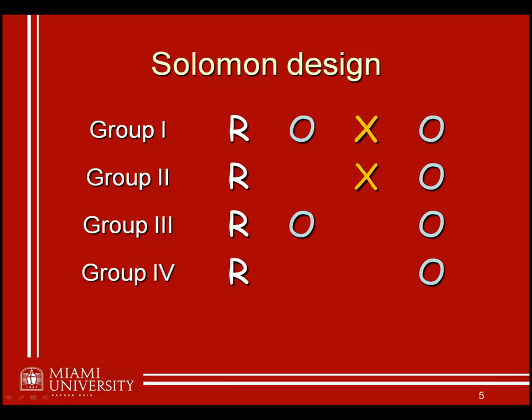Group one has both the pretest and the treatment. Group two has just the treatment. So at the level of treatment yes, we have pretest yes and pretest no — that gives us our first two groups. For the other level of the factor, treatment no, we again have pretest yes and pretest no, and that gives us groups three and four respectively.